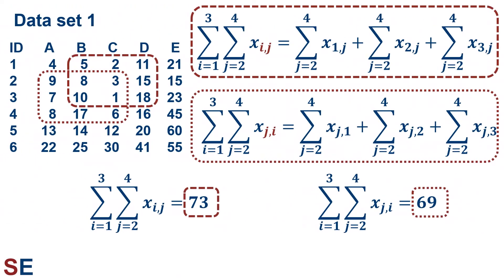Here's the summary of the two double summations we just did, showing the dashed and dotted lines for each. Double summations can seem overwhelming, but if you break them up into pieces or visualize them within the table, they become quite doable.